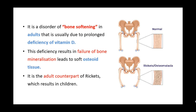Osteoid is a protein released by osteoblasts which gets mineralized when calcium deposits on it. Because of the deficiency of vitamin D, there is less calcium in the body, so the osteoid remains soft, leading to softening of the bone. This is the adult counterpart of rickets, which results in children.